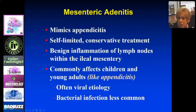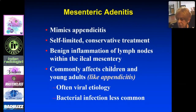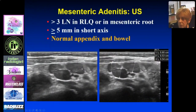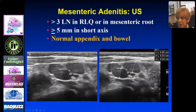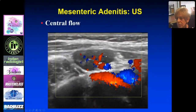Mesenteric adenitis mimics appendicitis. It's self-limited — normally patients are given something for pain and it will disappear in a couple of days. It's a benign inflammation of lymph nodes within the mesentery, affecting young children and young adults, similar age range as appendicitis. Often viral, but occasionally bacterial. The strict diagnosis requires seeing more than three lymph nodes in the right lower quadrant on the mesenteric root, greater than five millimeters in short axis, with a normal appendix and bowel visualized. On color Doppler, you see the characteristic flow in the central hilum, just like any other lymph node.